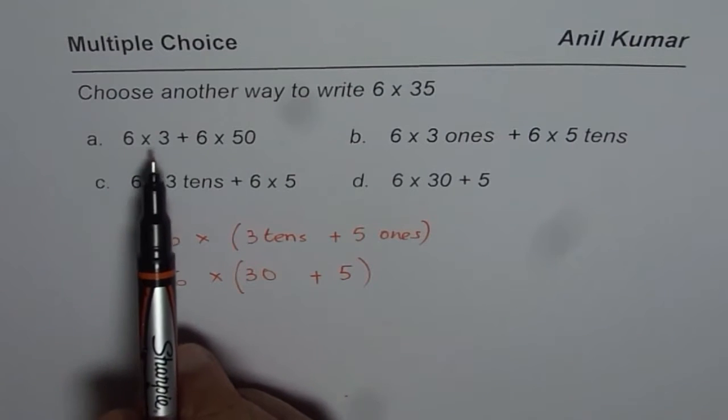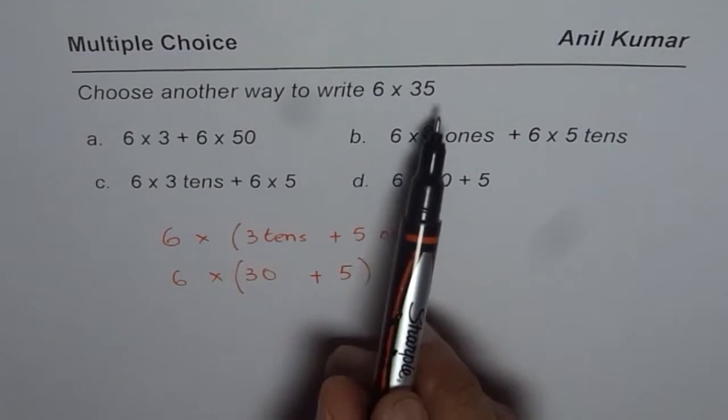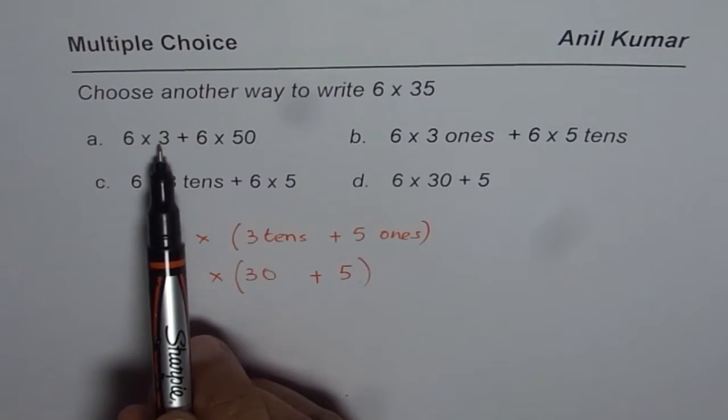Part A is 6 × 3 + 6 × 50. Well, that is not correct. 5 is ones, 3 is tens. That is not correct.